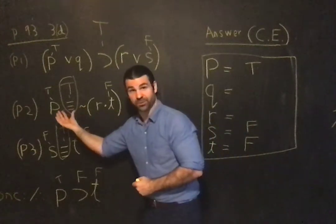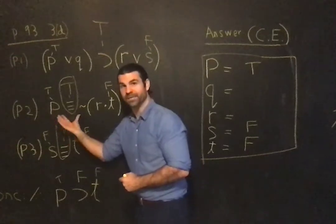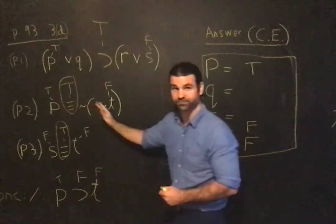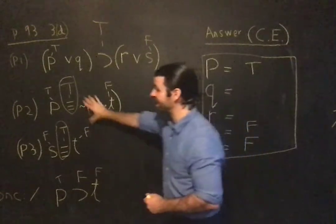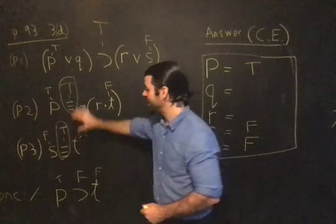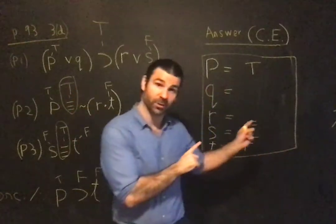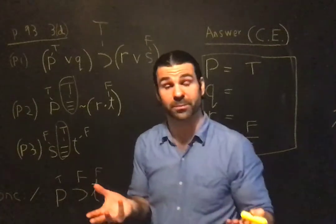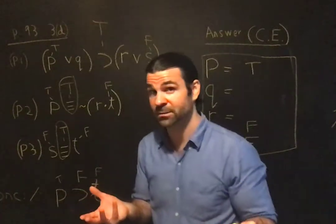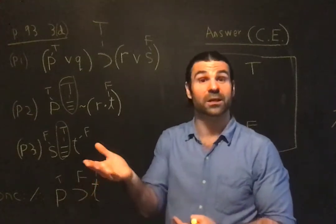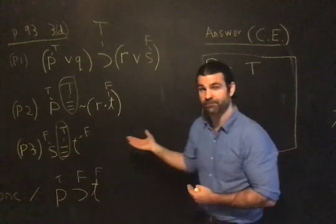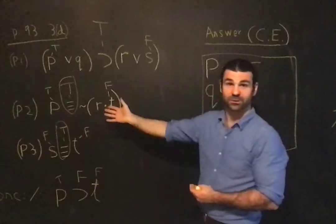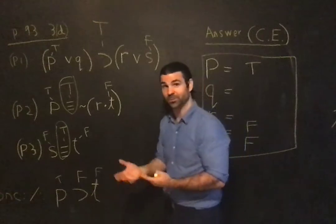So the biconditional has to be true; we have to meet that requirement. Otherwise, if we somehow contradict that requirement, we haven't got a counterexample. If we cannot meet that requirement — think about what happened with the modus ponens attempt — if we can't meet that requirement, it probably means we can't find a counterexample, which means, as long as we haven't made a mistake, that the argument form is valid. If we can meet the requirement of making all the premises true in our assignment, that would be a counterexample showing it's invalid.